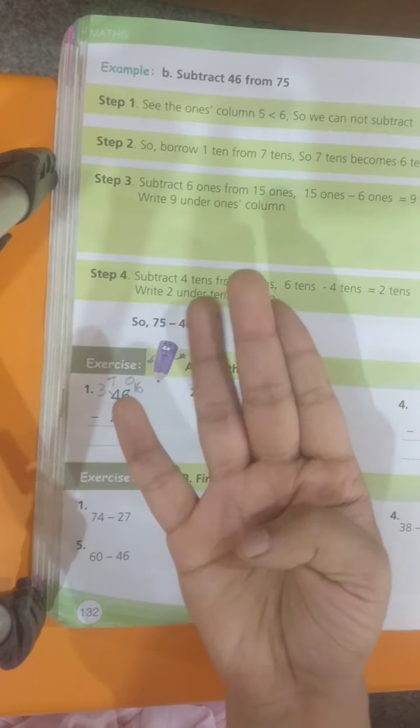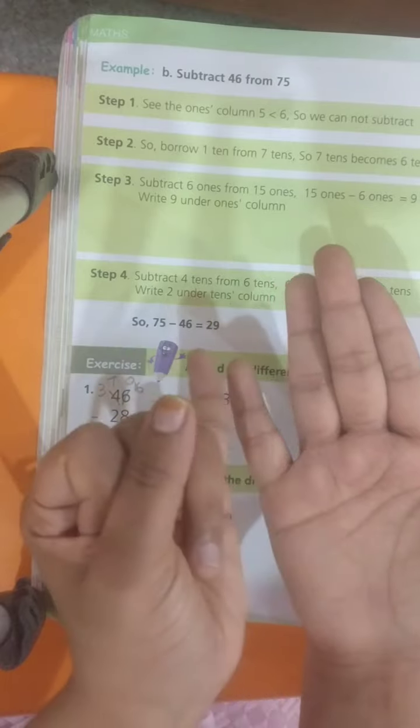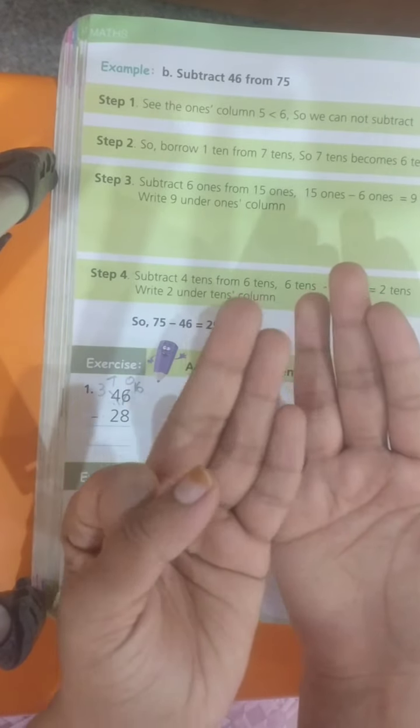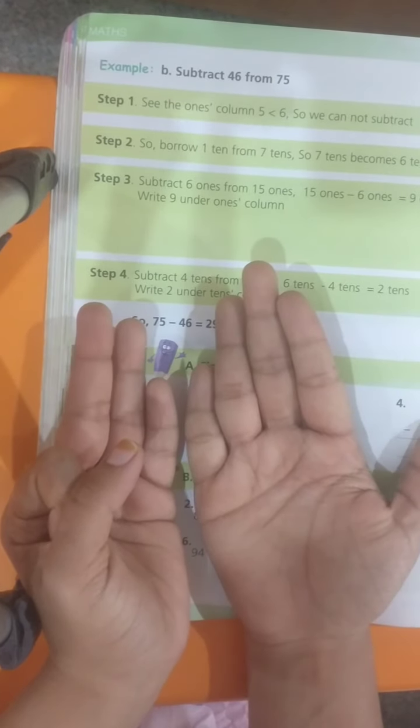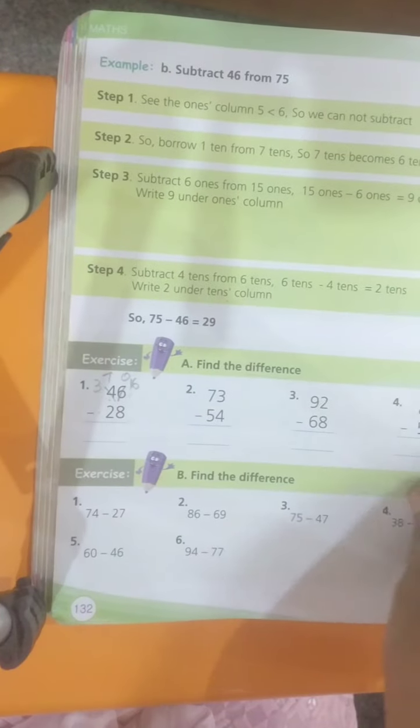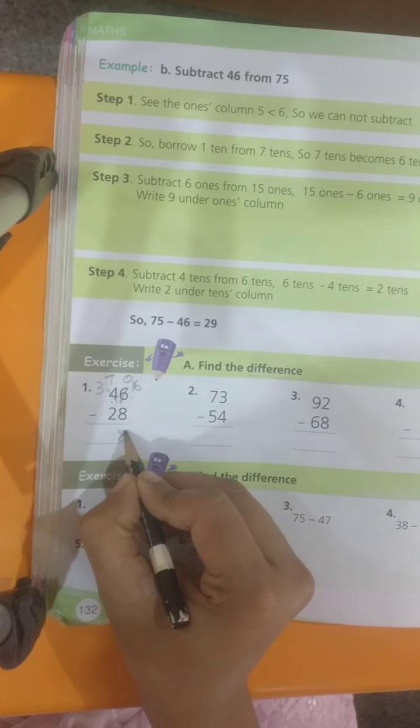After 8, 9, 10, 11, 12, 13, 14, 15, 16. So, how many fingers are open? 8 fingers. That is my answer.